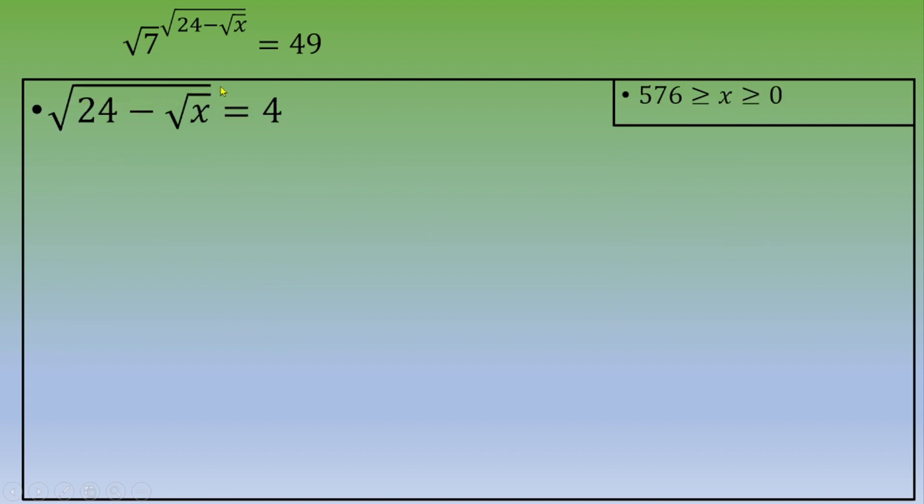Squaring both sides, we get 24 - √x = 16. This means √x = 8, so x = 64.